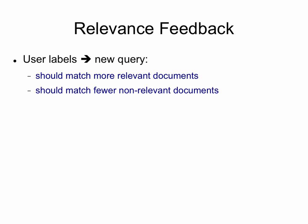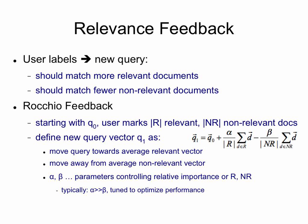So how does relevance feedback work? When you click on a document and you say to Google that you would like to see that document higher in the ranking, how can Google interpret that? The idea is to take those clicks and try to translate them into a new query — a query that will attract more relevant documents and fewer non-relevant documents.